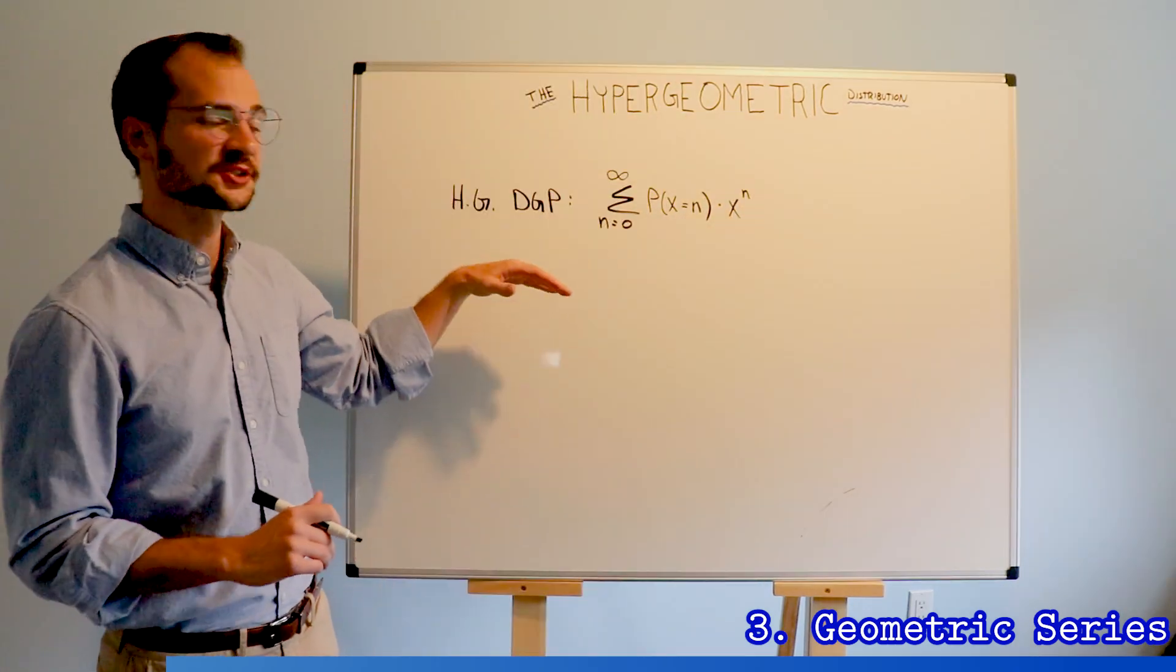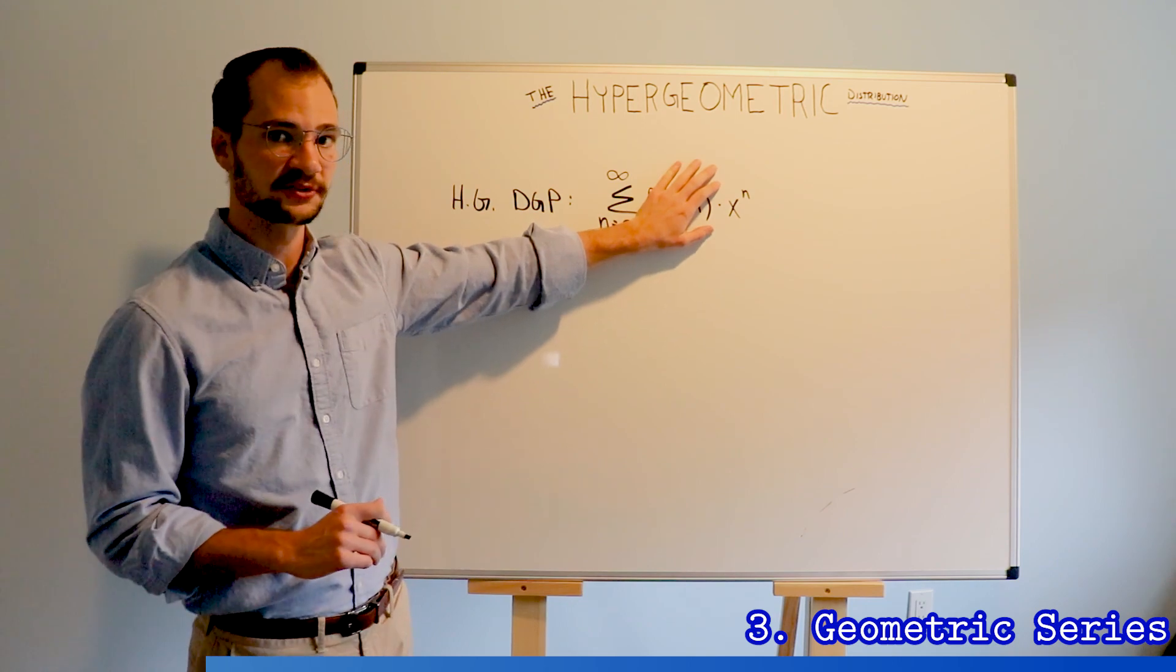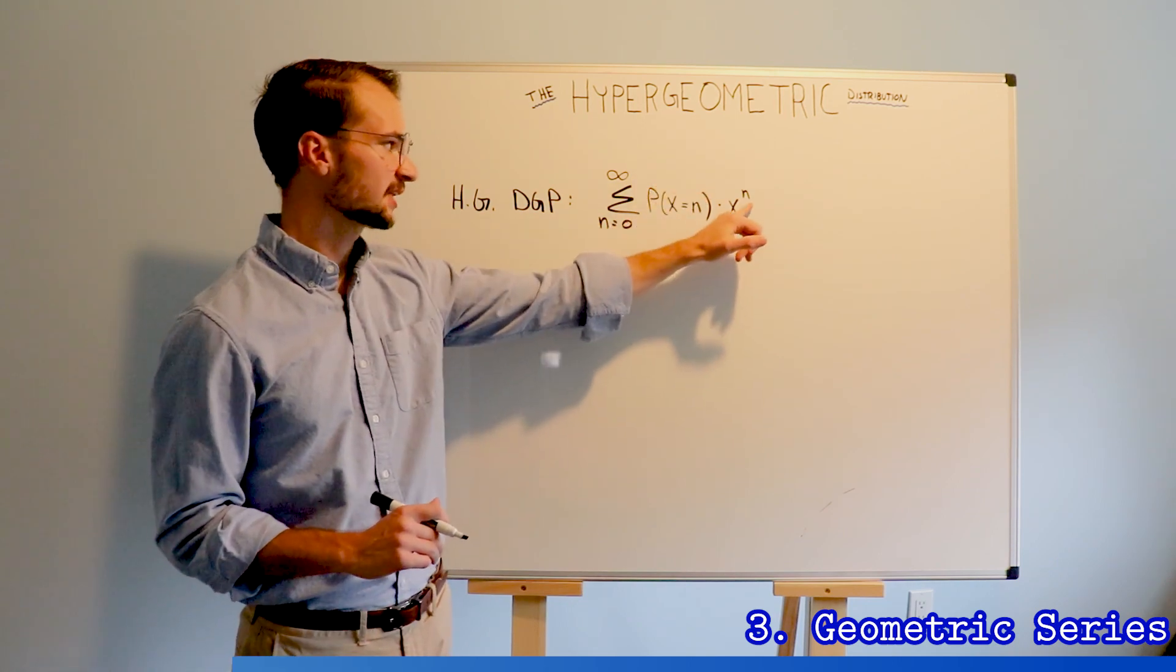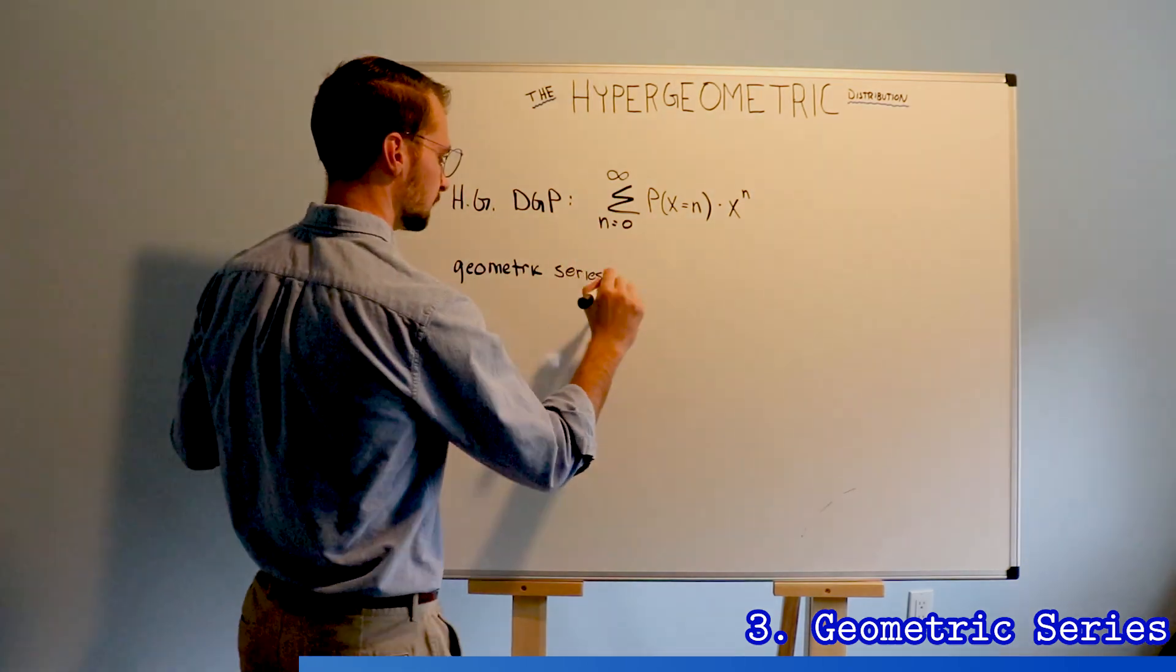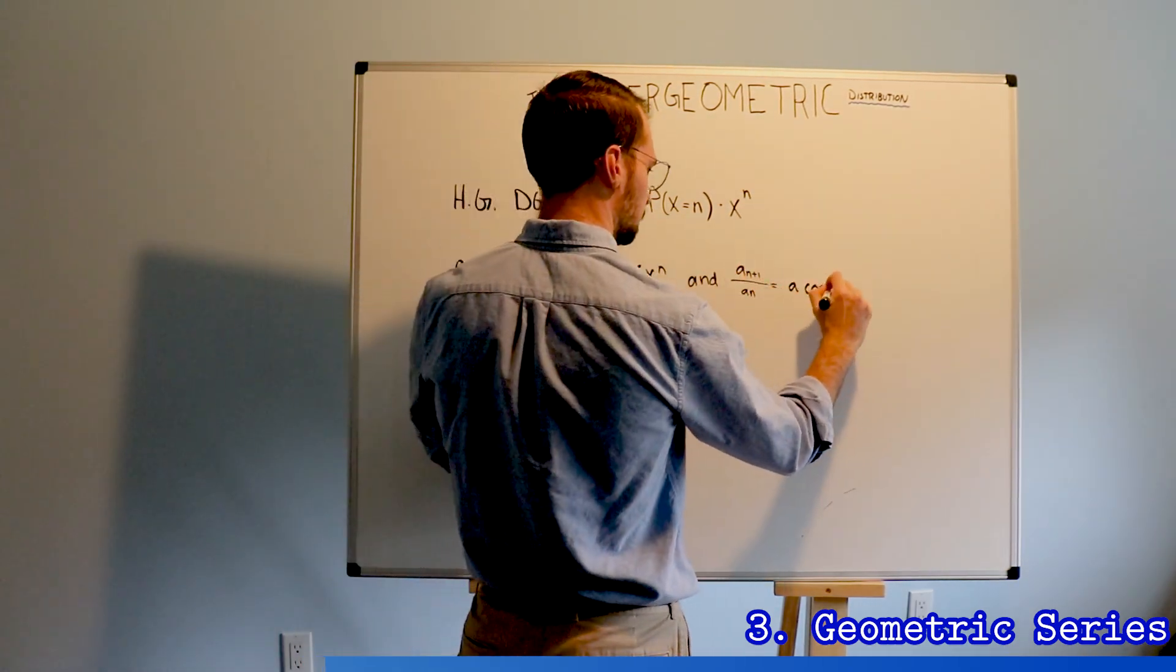A typical geometric progression does not include this coefficient. It's just the summation of x to the n. And a geometric sequence is one in which sequential values are of a fixed ratio.